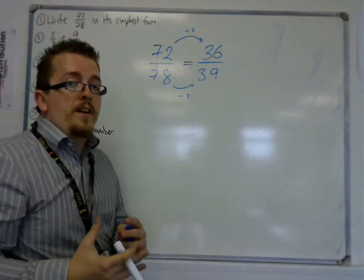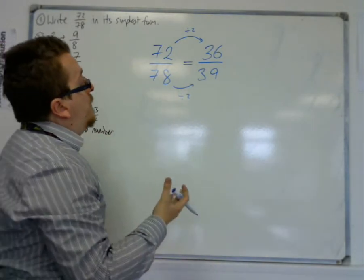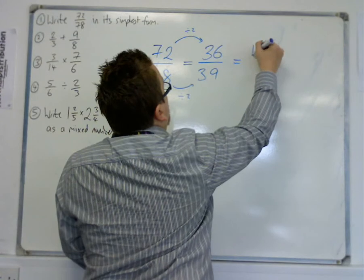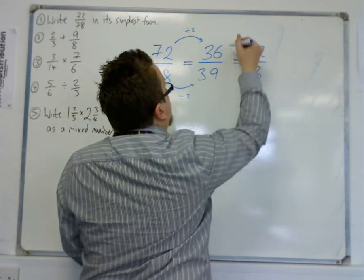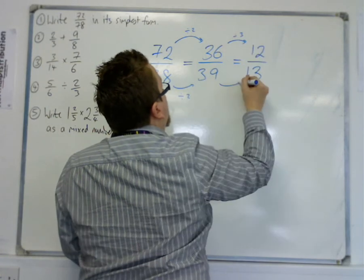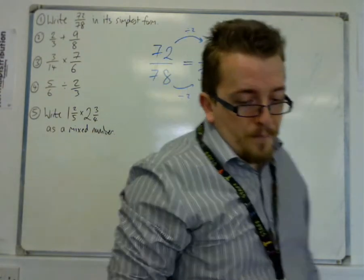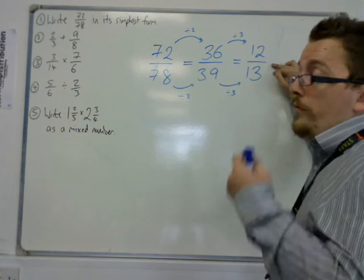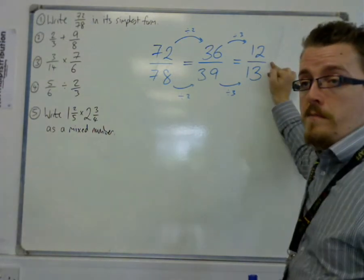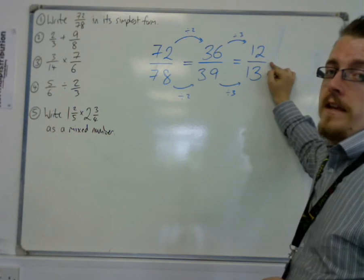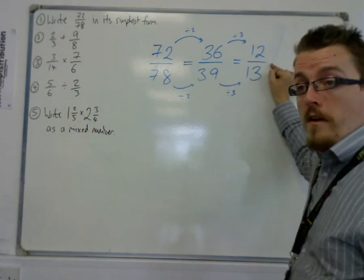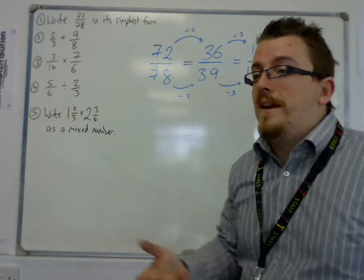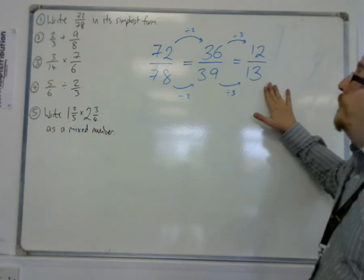Then 36 over 39, they're not both even, so we can't divide by 2 again. But we can see that they are both in the 3 times table, so divide both by 3, and we're going to get 12 over 13. 12 over 13 would be considered as co-prime. This means that the highest common factor of both of them is 1, which means that I cannot divide top and bottom by another other than 1, which wouldn't really make any difference. So 12 over 13 is this fraction in its simplest form.